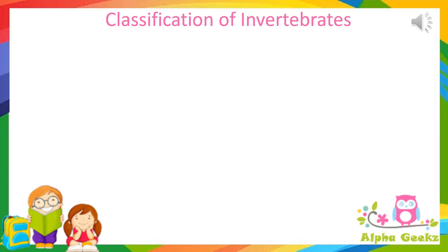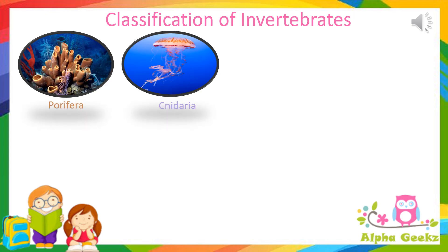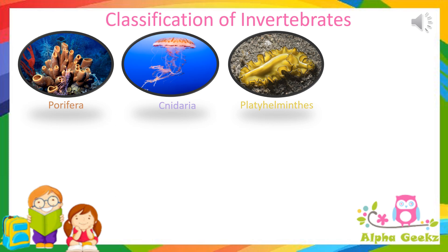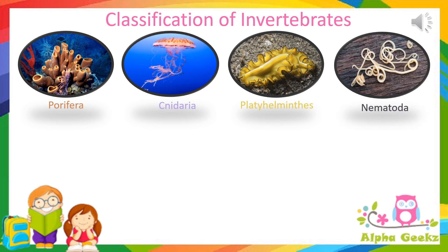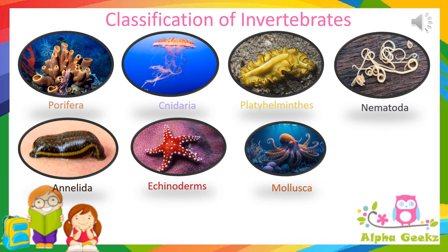Classification of invertebrates: invertebrates are classified into eight main types. These include Porifera, Cnidaria, Platyhelminthes, Nematoda, Annelida, Echinoderms, Mollusca, and Arthropoda.